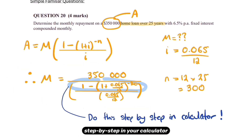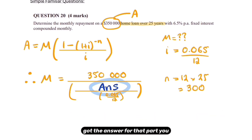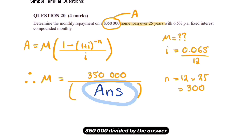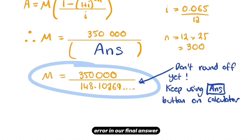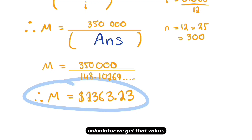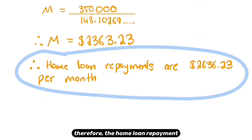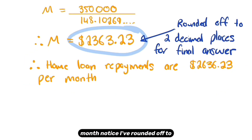You want to do this step by step in your calculator rather than all at once to reduce the risk of error. Once you've got the answer for one part, store it in your calculator, then do the next part step by step. You don't want to round off early — keep it stored as the answer in your calculator to avoid rounding error. Once we plug everything in, we get our value, and the monthly home loan repayments are that amount, rounded to two decimal places.